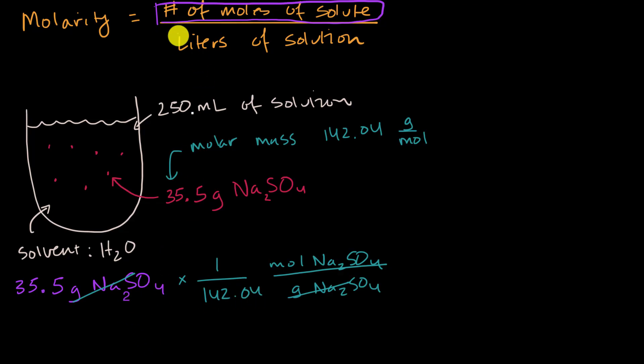So we'll get a calculator out in a second and just take 35.5 and divide that by 142.04. And then to figure out molarity, we want to divide by the liters of solution. So up here, we have a calculation for number of moles. And then the liters of solution, 250 milliliters, is the same thing as 0.250 liters of our solution. And now we can just use our calculator to figure out what this is.